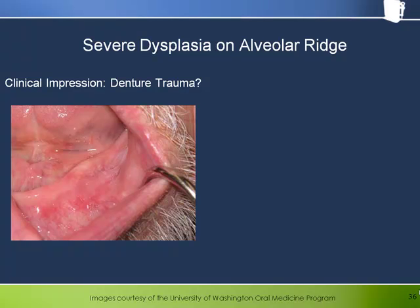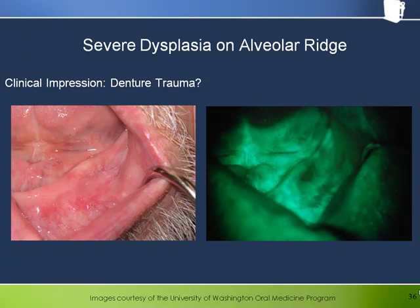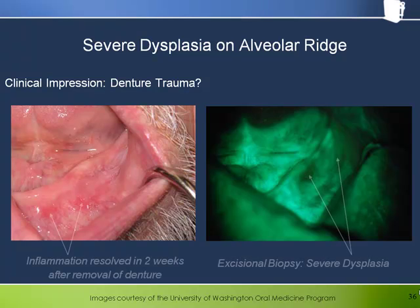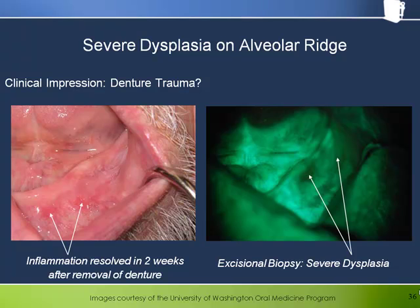This is a clinical presentation that might present in a typical GP's office and might on cursory examination be considered an example of denture trauma. Under white light, areas of erythema and hyperkeratosis on the alveolar ridge are evident. Under fluorescence, the hyperkeratotic area on the alveolar ridge demands attention with an intense loss of fluorescence. The clinician relieved the denture and examined the patient again approximately two weeks later. The areas of erythema in the vestibule were gone, but the intense loss of fluorescence on the ridge remained and was found to contain severe dysplasia after an excisional biopsy.